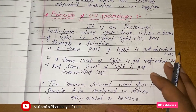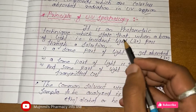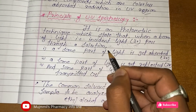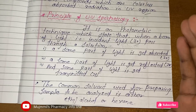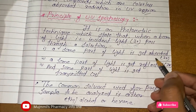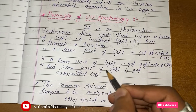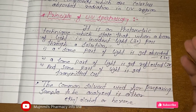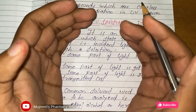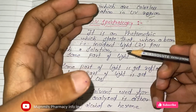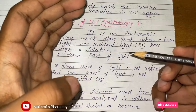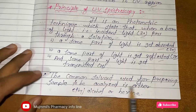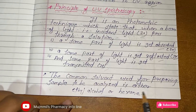The principle of UV-Visible spectroscopy: it is a photometric technique which states that when a beam of incident light (I₀) passes through a solution, some part of the light gets absorbed, some part gets reflected (represented as Ir), and some part gets transmitted. So when UV light passes through a container, some light is absorbed, some is transmitted, and some is reflected. This is the principle of UV spectroscopy.